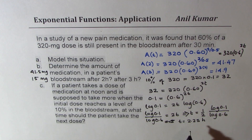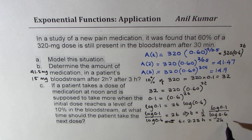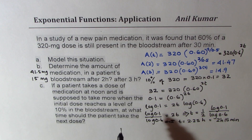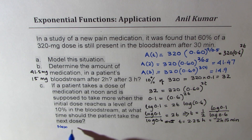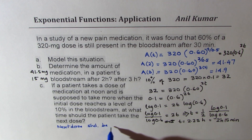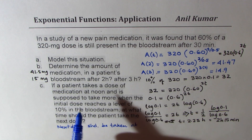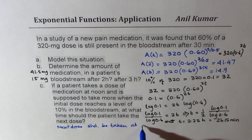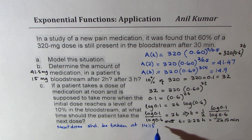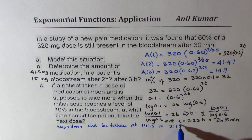A quarter of an hour is 15 minutes, so T equals 2 hours and 15 minutes. At what time should the patient take the next dose? The next dose should be taken after 2 hours and 15 minutes — that means 14:15, or 2:15 PM. After 2 hours and 15 minutes from noon.